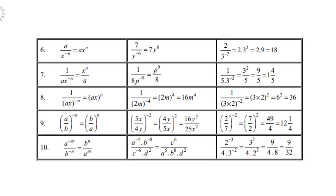Definition 6: a over x to the power negative n — the x goes up to the numerator, becoming ax to the power positive n. For example, 7 over y to the power negative 6 becomes 7y to the power positive 6. And 3 over something to the power negative 2 goes up, giving 3 to the power positive 2, which is 9 — so the result is 18.